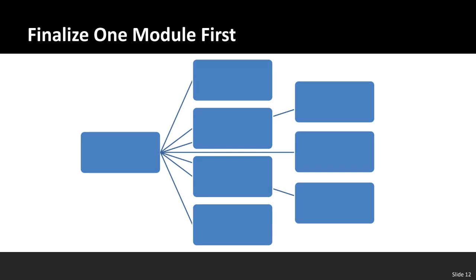Another strategy for managing your workload is to finalize one module first before moving on to the next. By focusing on one module and trying to perfect it as much as possible, you can use it as a template for the rest of your course. For example, every week you might have a module introduction, module objectives, a weekly greeting, then assigned readings, and links to recorded lectures for asynchronous courses — the same format every single week so you never have to guess where to put a particular component.